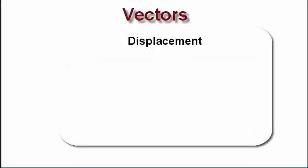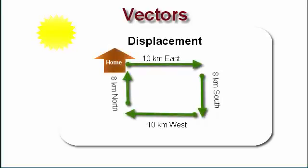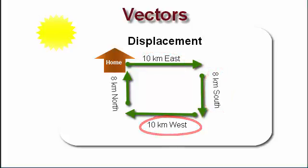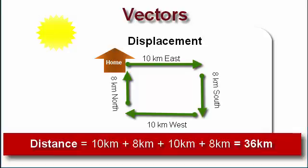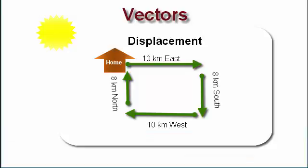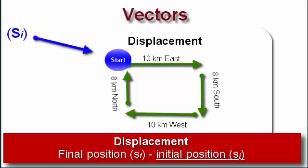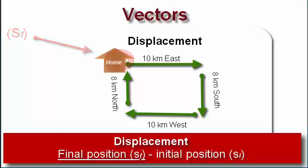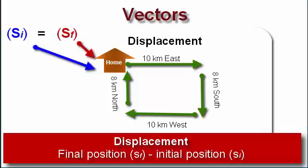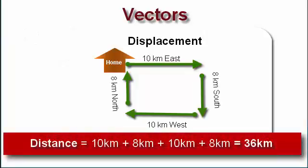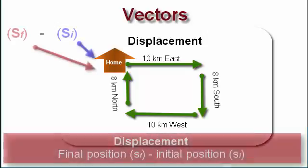To make this clearer, let's go back to the previous example — a nice sunny day, taking a drive around the neighborhood. The dimensions haven't changed: 10 kilometers east, 8 kilometers south, 10 kilometers west, and 8 kilometers north. We determined that the distance traveled was 36 kilometers. Now let's calculate the displacement. When calculating displacement, we're concerned about where you started and where you finished. You can see that the starting place is no different from the ending place — you left home and returned home. Therefore, while your distance totaled 36 kilometers, your displacement is actually zero.